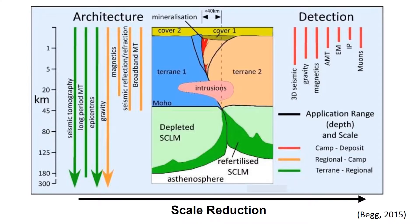This figure here is taken from Graeme Begg from the Uncover initiative and it shows the scale length of MT surveys. On the left hand side, long period MT covers the entire lithospheric system. Broadband MT ranges from the surface down to about the Moho, imaging the crustal system and particularly the link between the lower crust and the upper crust. Finally, AMT or Audio Magnetotellurics gives resolution in the 0 to 2 km scale and can be used for direct detection. MT can span the entire scale length of a mineral system, and these days new instrumentation can span all of these different techniques with one set of magnetometer coils.